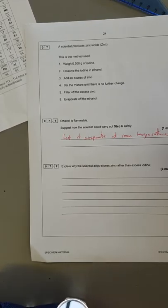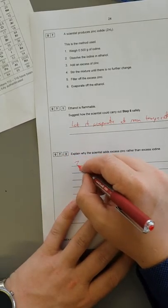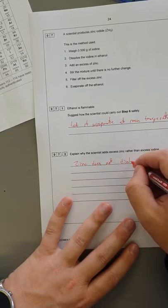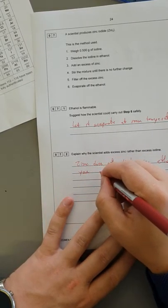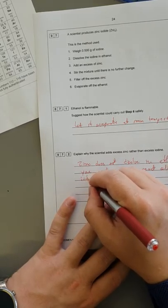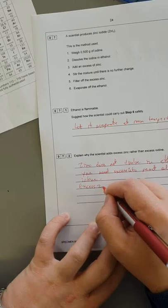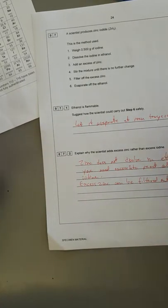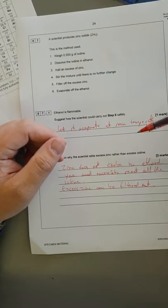Explain why the scientists add zinc to excess rather than iodine. The answer is zinc does not dissolve in ethanol, you need an excess to react all the iodine, and excess zinc can be filtered out. You could also say the converse, that iodine does dissolve so you can't actually filter out the excess iodine, whereas you can filter out the excess zinc.